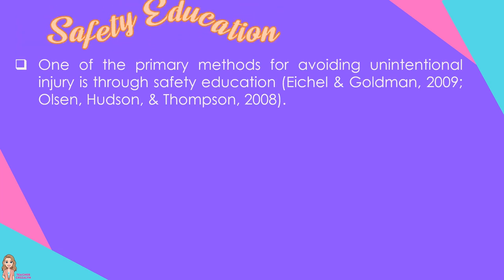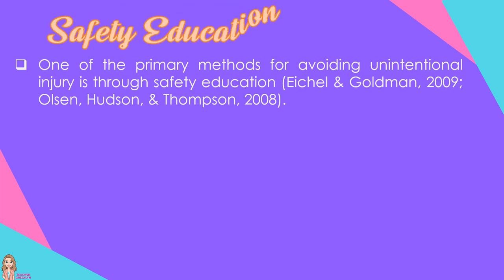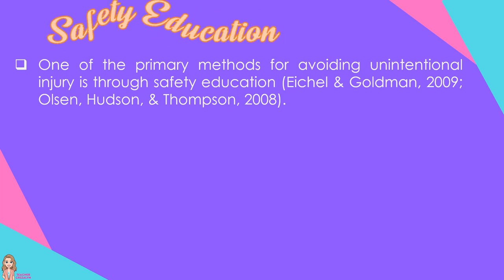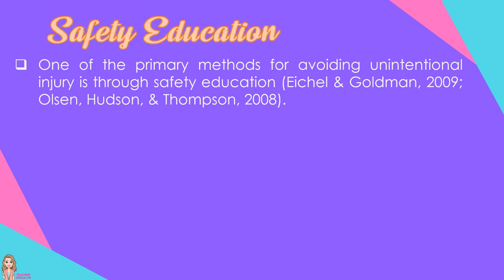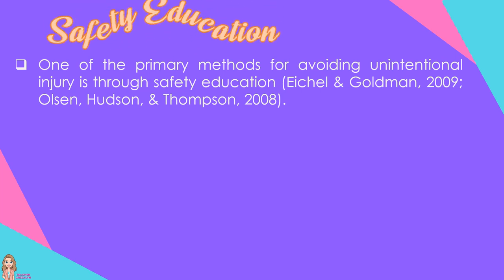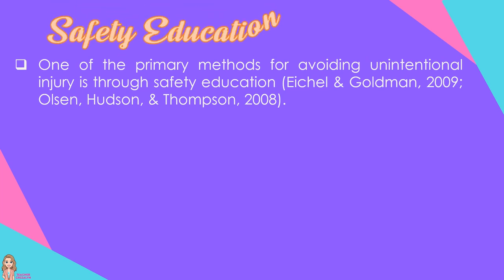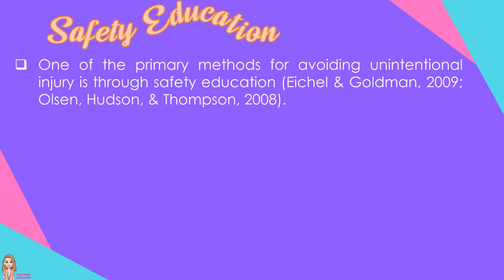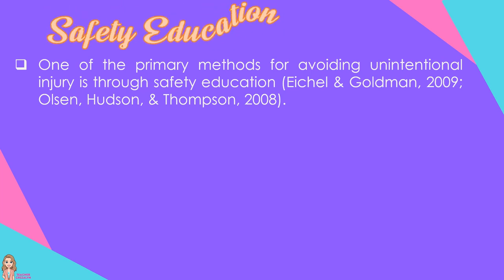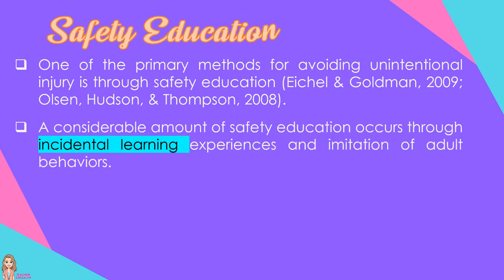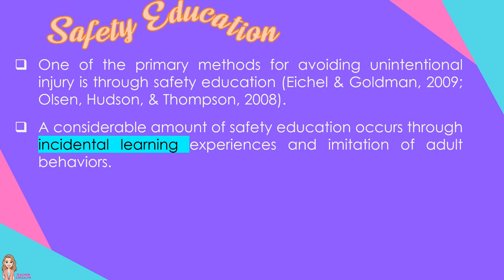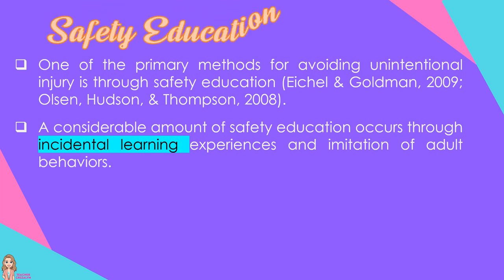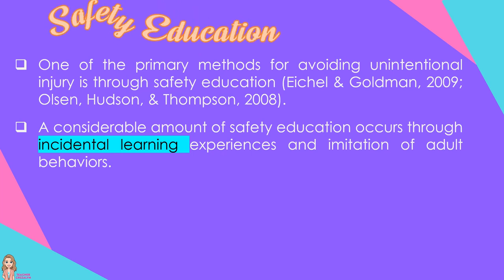One of the primary methods for avoiding unintentional injury is through safety education. Children can begin learning safe behaviors as soon as they understand the meaning of words. The earlier children learn about safety, the more naturally they will develop the attitudes and respect that lead to lifelong patterns of safe behavior. A considerable amount of safety education occurs through incidental learning experiences and imitation of adult behaviors. Children who exhibit safe attitudes and practices can also serve as role models for other children.